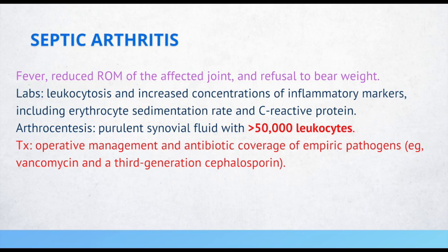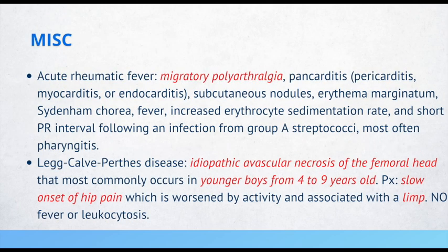Acute rheumatic fever. Patients with this condition may have migratory polyarthralgia, pancarditis, subcutaneous nodules, erythema marginatum, fever, increased ESR, and short PR intervals following an infection from Group A Strep, most often pharyngitis. So if a patient had a Group A Strep infection or pharyngitis and then develops pancarditis and subcutaneous nodules, you want to think about acute rheumatic fever.